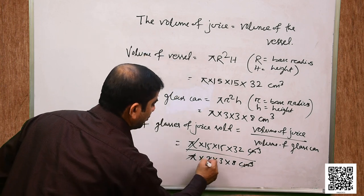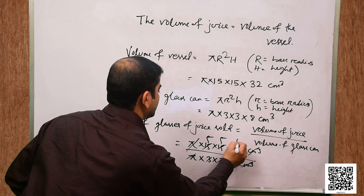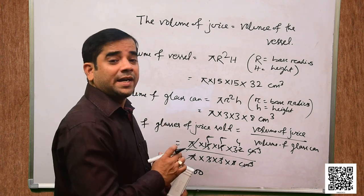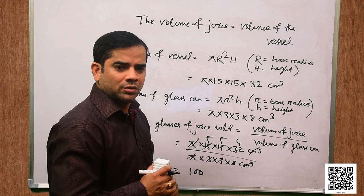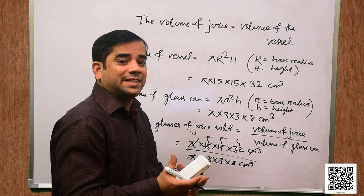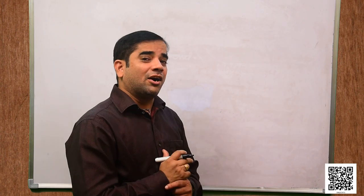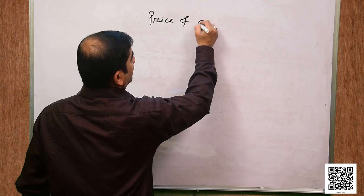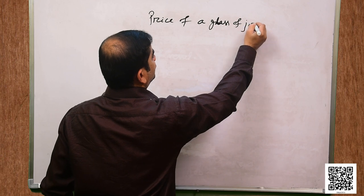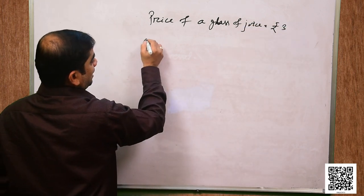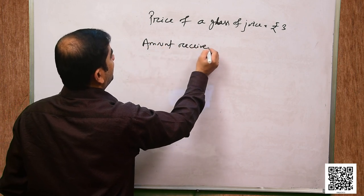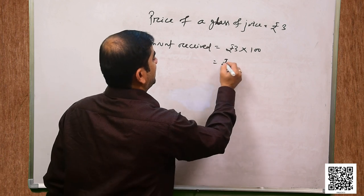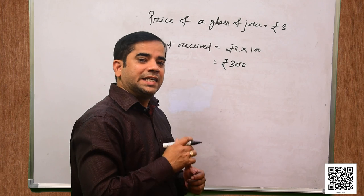Pi cancels out and centimeter cube cancels out — it works out to 100. So 100 glasses of juice were sold. The price of a glass of juice is rupees 3, so the amount received will be rupees 3 into 100, that is rupees 300. This is the amount the stall keeper receives.